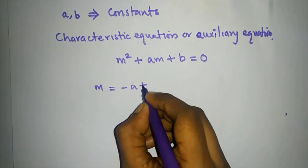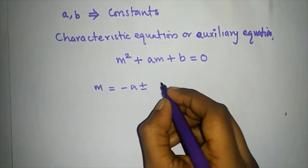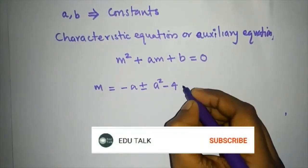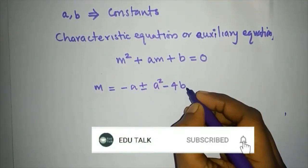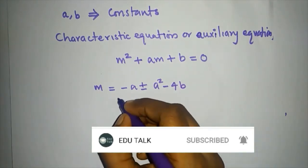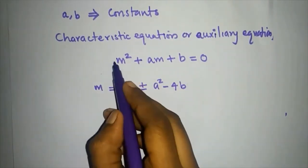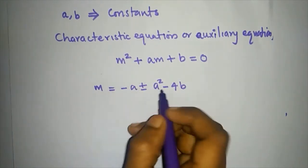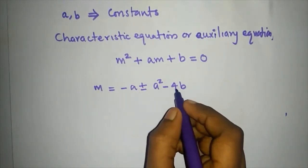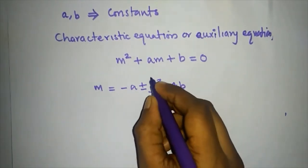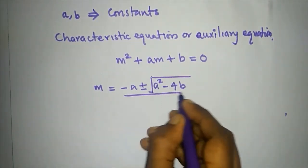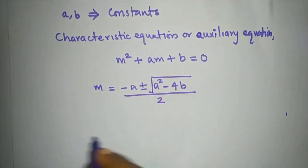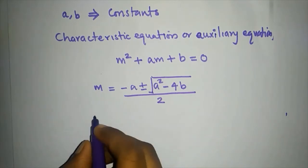In this case, we will use the quadratic formula. That is: m equals minus a plus or minus the square root of a squared minus 4b, divided by 2. If the coefficient of m squared is not 1 — suppose it is 2 — then 4b becomes 4b times 2.